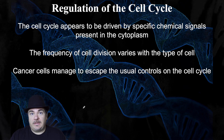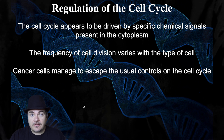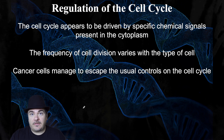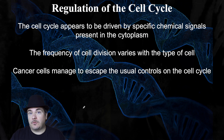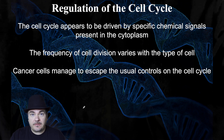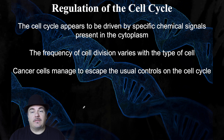It turns out that inside cells are chemical signals that tell the cell what stage of the cell cycle they should be at — like should they be in G1, or should they be going through S phase, or should they be going through mitosis. Different types of cells divide at different rates. So let's get into some of those details.